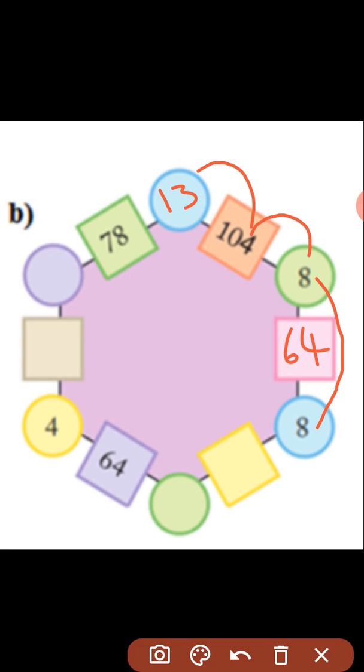Same way the next one 78 product is there. So you divide 78 by the number 13. You will get the answer is 6. That's 6 you can write inside the circle. So 6 into 13 you are getting the answer is 78.